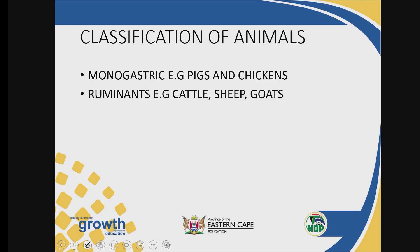The monogastrics have got one stomach, hence the name monogastric. Mono means one, gastric means stomach. So these are animals that have only one stomach. In the case of ruminants, these are animals that have got more than one stomach. For example, cattle, sheep, and goat have got four stomachs — they are four-chambered animals.